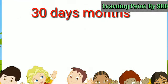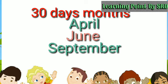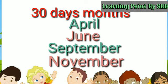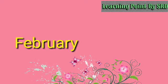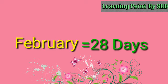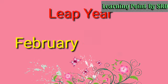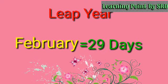There are 30 days in the months of April, June, September and November. The month of February has 28 days, but in a leap year, the February month has 29 days.